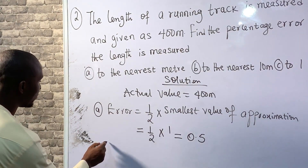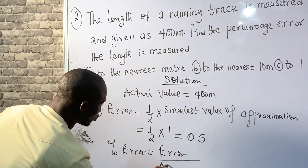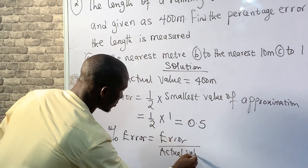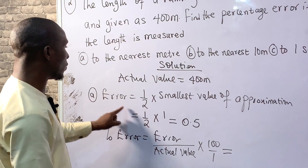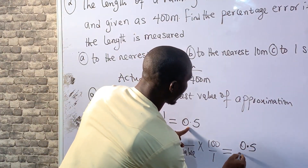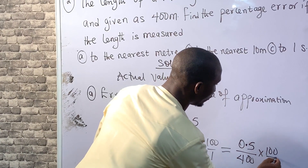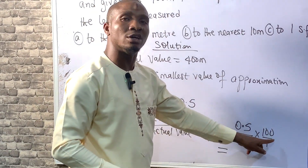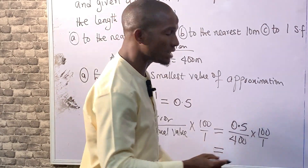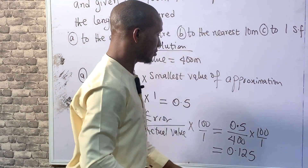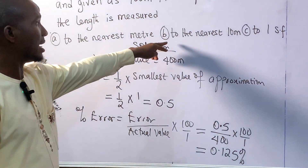Since we now know the error, we can calculate the percentage error. Percentage error equals error divided by the actual value, times 100. From question (a), the error is 0.5, divided by the actual value of 400, times 100. That gives 50 divided by 400, which is 1 over 4, equal to 0.125%. So the percentage error for question (a) is 0.125%.